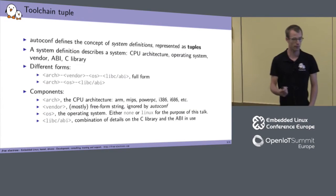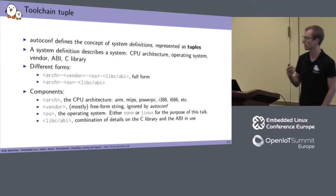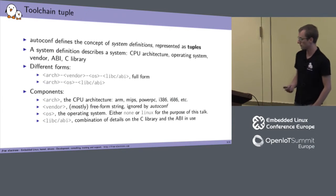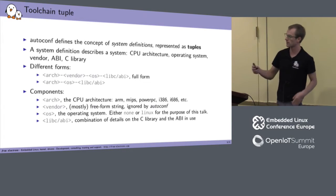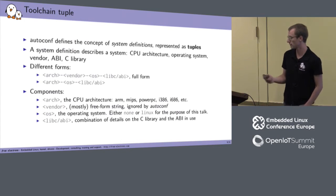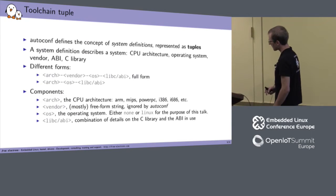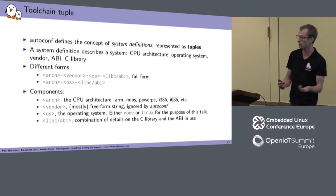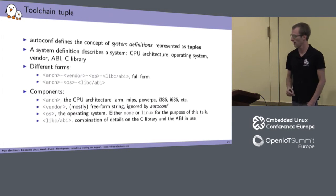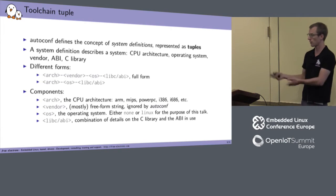Autoconf specifies a concept called system definitions, represented by tuples. A system definition describes a system — its CPU architecture, C library, operating system, vendor, ABI, and sometimes other information. The full form is arch-vendor-OS, and then some combination of C library and ABI information. There are shorter forms that omit the vendor part. The arch defines the CPU architecture (ARM, MIPS, x86, etc.). The vendor is mostly a freeform string identifying the company that produced the toolchain. The OS is the operating system being targeted — for this talk we'll consider 'none' and 'Linux'.